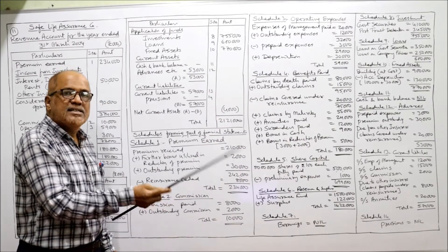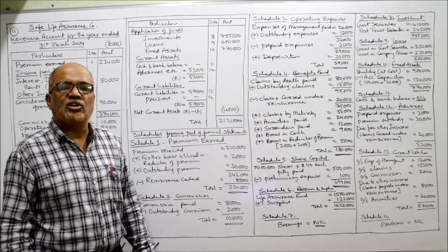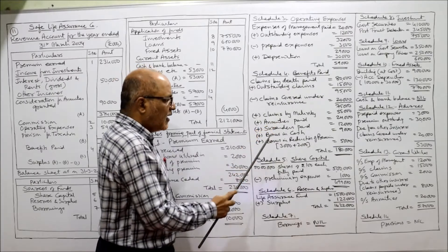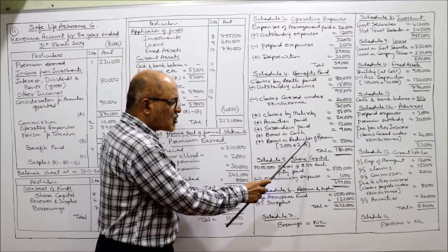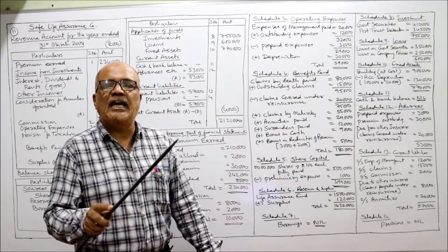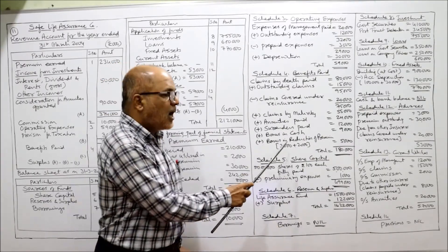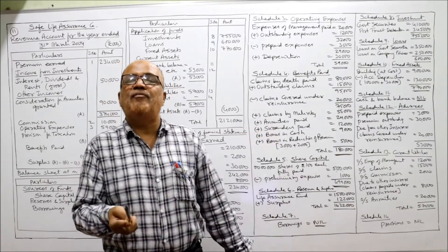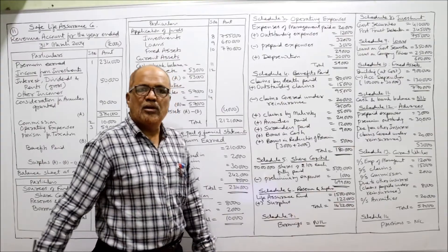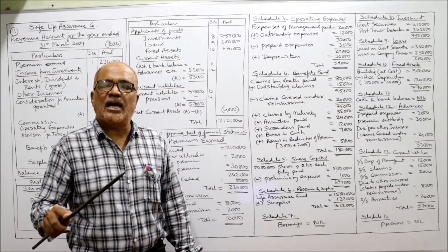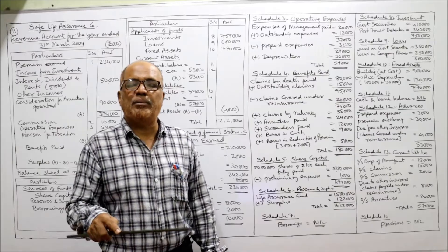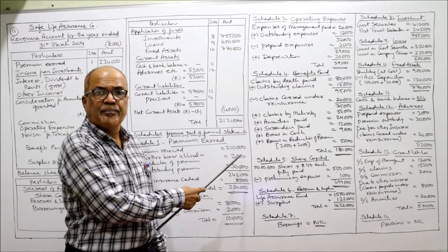The second effect of Adjustment 3: this further bonus utilized in reduction of premium is added to bonus in reduction of premium in Schedule 4, benefits paid. In the trial balance, bonus in reduction of premium is given as 3,000. The adjustment adds a further 2,000, making 3,000 plus 2,000 equals 5,000 total. So both effects of this adjustment are in the revenue account only.